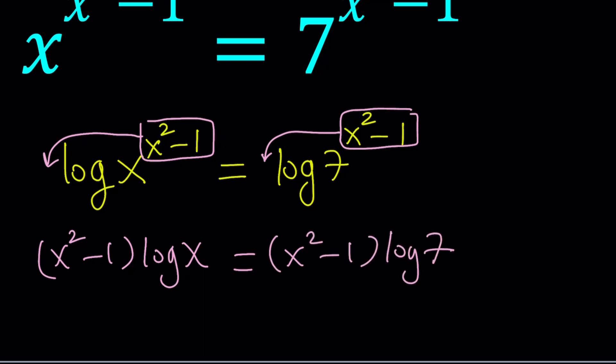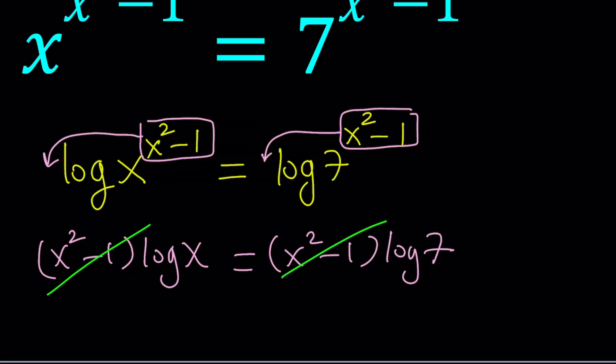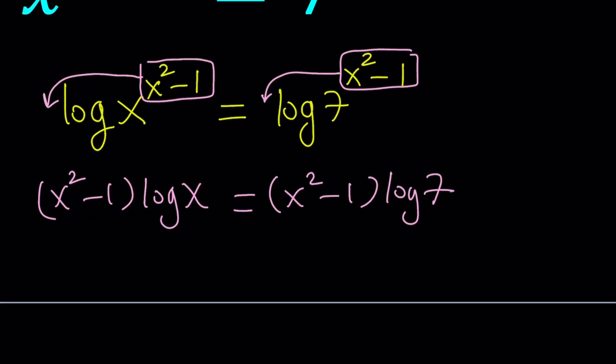That's going to give us x squared minus 1 log x equals x squared minus 1 log 7. And at this point, it's pretty natural to just cancel out x squared minus 1. Like, okay, let's just go ahead and scratch it out. Uh-oh, that's not good. Don't do that. No, no. That's a big no-no. Why? I'll tell you in a little bit.